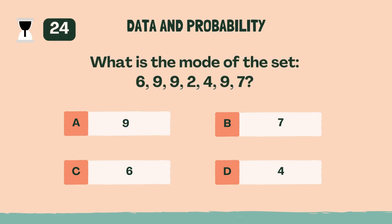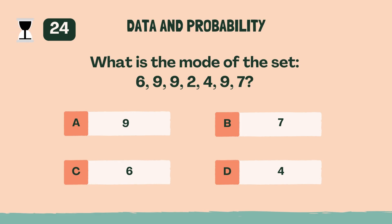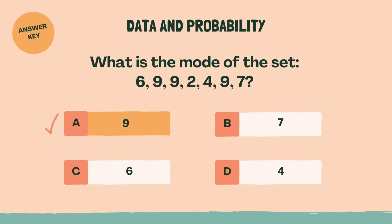What is the mode of the set: 6, 9, 9, 2, 4, 9, 7? A, 9.